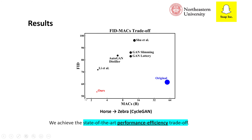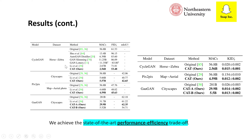With our three methods, we achieve much better results than previous methods and achieve better results with much reduced computational cost compared to the original model. As shown here, for the horse-to-zebra dataset with the CycleGAN model, we achieve state-of-the-art performance-efficiency trade-off. We also verify our method on several different datasets and models, achieving state-of-the-art performance-efficiency trade-offs and better performance with much reduced computational cost.